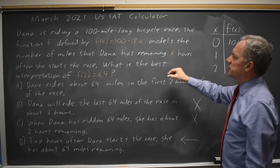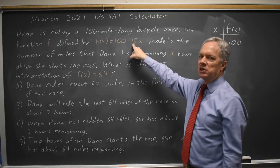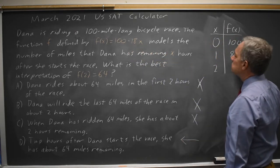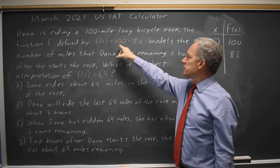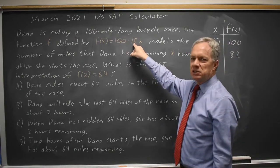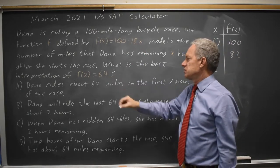After 1 hour, f(x) is 100 - 18 times 1, 100 - 18 is 82. And after 2 hours, f(x) is 100 - 18 times 2, and that is 64 as they told us.